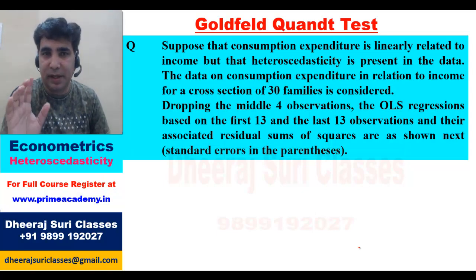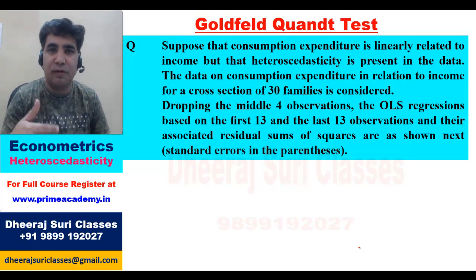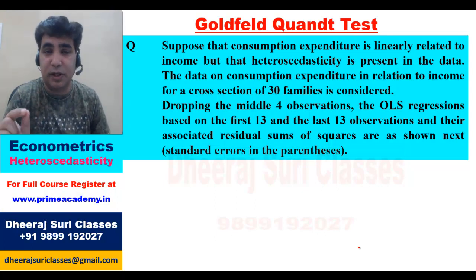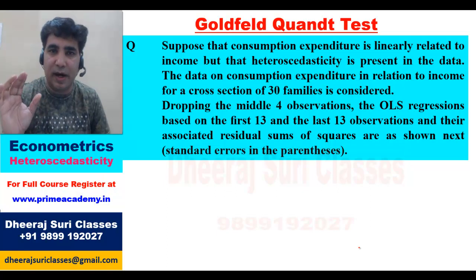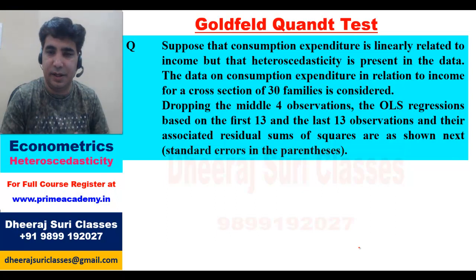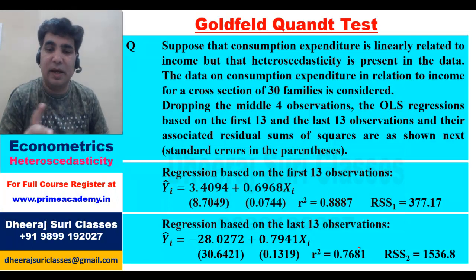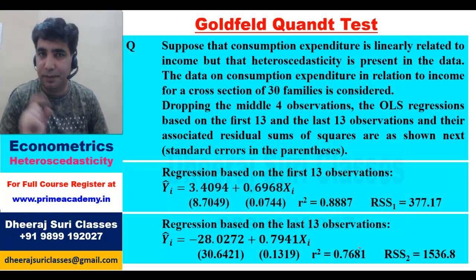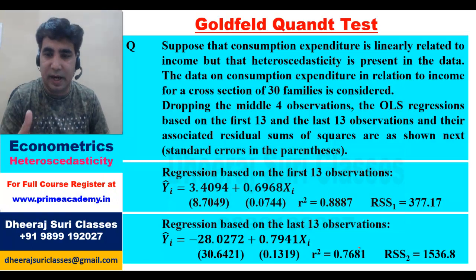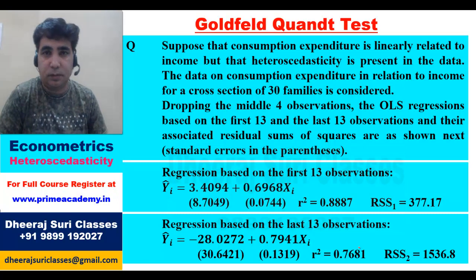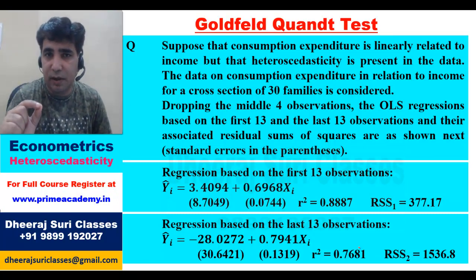With 30 observations and C=4, we have 26 remaining values: 13 in the upper part and 13 in the lower part. The regression based on the first 13 observations gives: Ŷi = 3.4094 + 0.6968·xi, with RSS1 = 377.17. The regression for the lower 13 observations gives RSS2 = 1536.8.